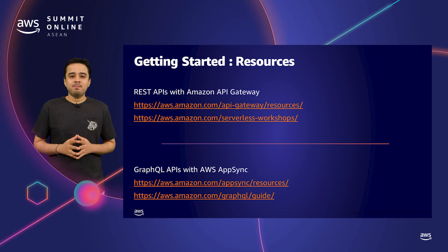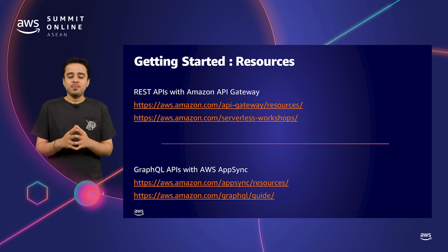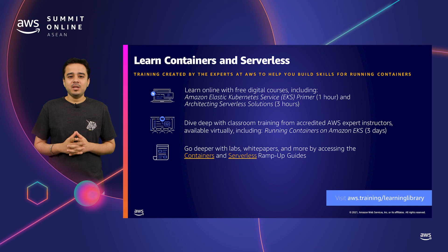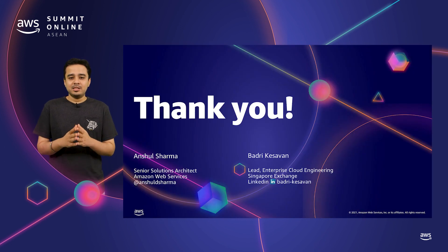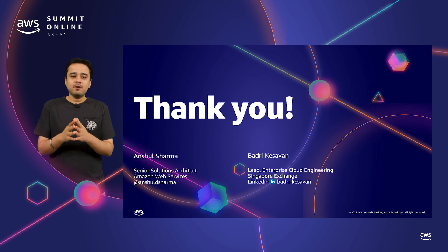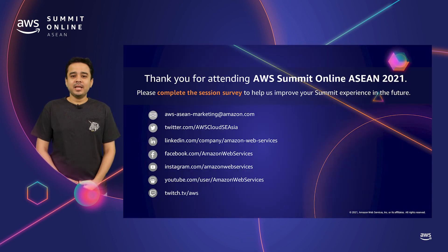Thanks to Badri and the Singapore Exchange team for sharing their work with us today — it's always good to learn from an actual customer implementation. If you're looking to get started on APIs with AWS, there are a couple of resources: a serverless workshop for getting started with API Gateway, and a developer guide to dive deep into GraphQL and AWS AppSync. You can keep learning beyond the summit with resources from AWS Training and Certification for containers and serverless — explore labs, white papers, and other technical resources by visiting the learning library. Please complete the feedback survey to help us build an improved summit experience in the future.